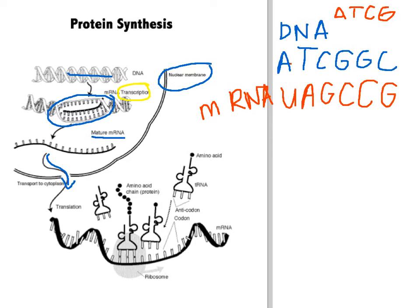The second process of protein synthesis is called translation. Translation happens outside of the nucleus in the cytoplasm, and the process of translation is going to happen in the ribosome. Here we have the ribosome — it's sort of egg shaped. The mRNA strand formed in the nucleus is actually going to leave the nucleus, find a ribosome, and bind to it. Once it's bound to the ribosome, we're going to have some tRNA that comes and binds to the mRNA.